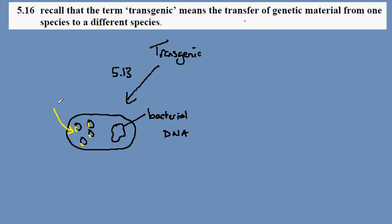So that would be the human insulin gene. So here we have an organism with its original DNA and with some human DNA, so this is an example of a transgenic organism.